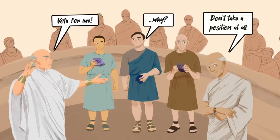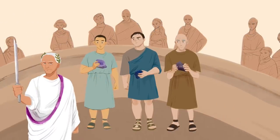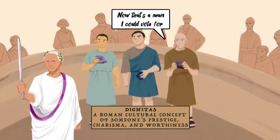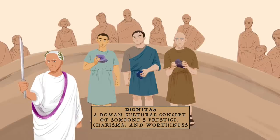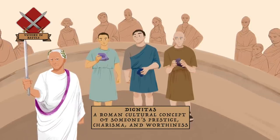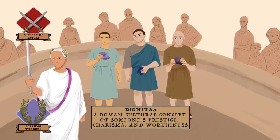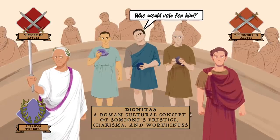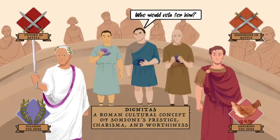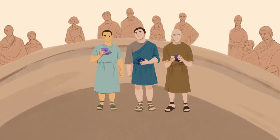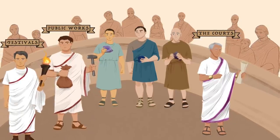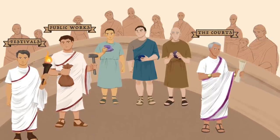So what exactly would convince a voter? Generally speaking, voters were often swayed by a candidate's dignitas — a concept in Roman culture encompassing ideas of prestige, charisma, and worthiness. Dignitas was like an aura a person accumulated over the course of their time in the public eye. For instance, winning a great battle and celebrating a triumph would be an enormous boost to your dignitas. On the opposite side would be someone who lost a battle dishonorably. But not everything revolved around military action — a man could make a name for himself in the public-facing court system, by building public works, or by hosting spectacular festivals and games.